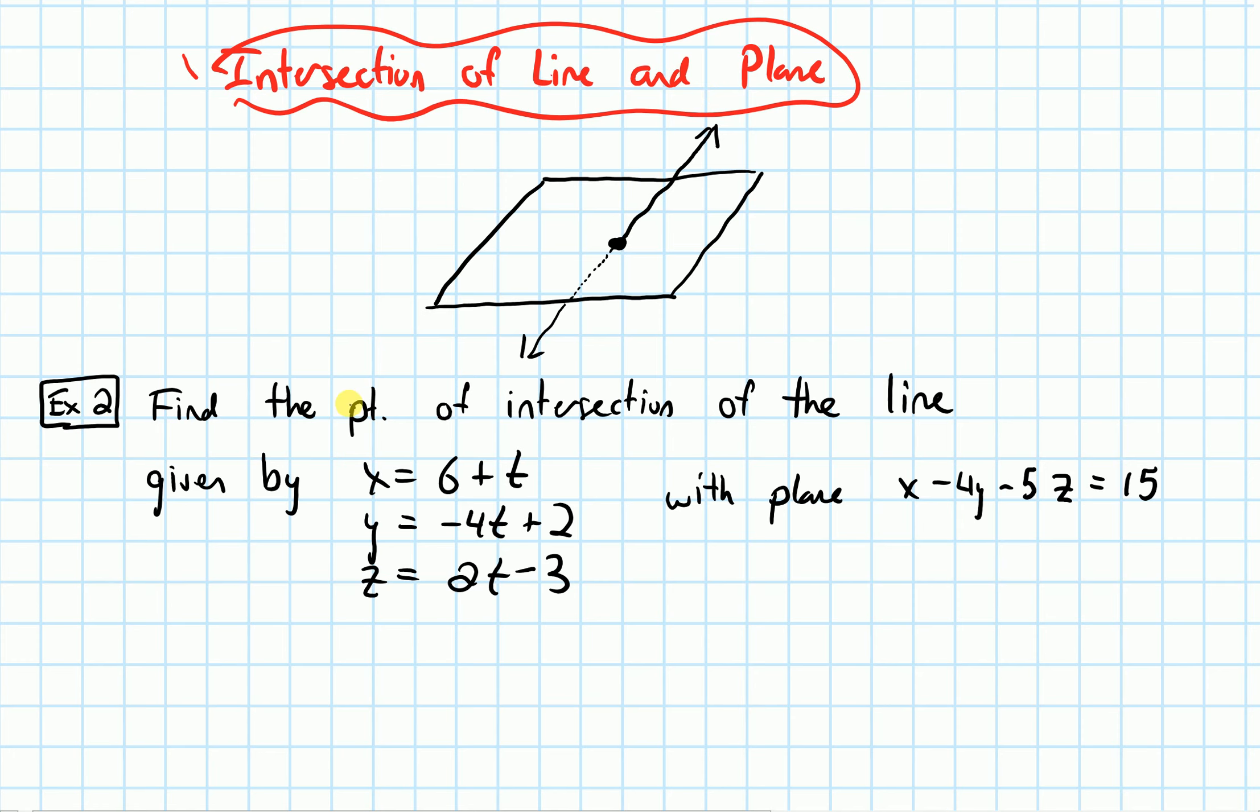Let's do an example. Find the point of intersection of the line given by these parametric equations: x = 6 + t, y = -4t + 2, z = 2t - 3. These three equations describe this line. The point of intersection of that line with the plane given by the equation x - 4y - 5z = 15.